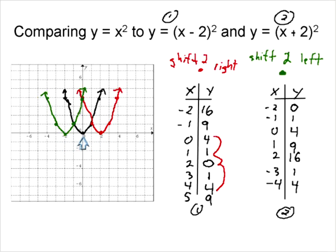We want to look at this vertex. What's happened to this vertex? In the first shift, the vertex is now at x = 2, y = 0. And for our green parabola, the vertex is now at x = -2, y = 0.